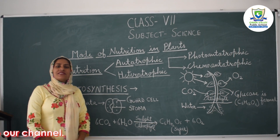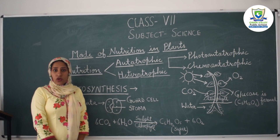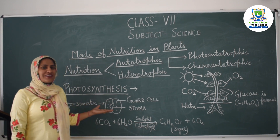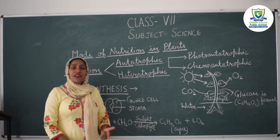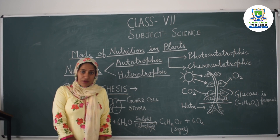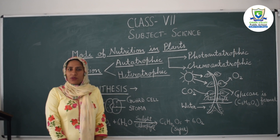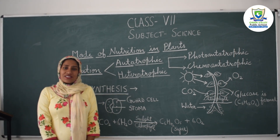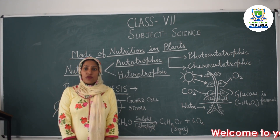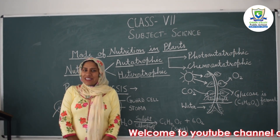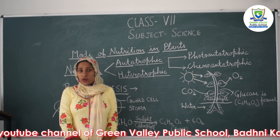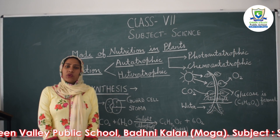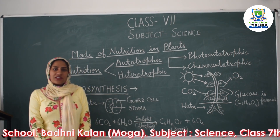The raw materials include carbon dioxide and chlorophyll, which is a green colored pigment present in green leaves. Chlorophyll gives green color to leaves and is already present in the plant body.